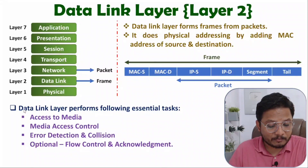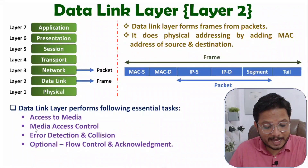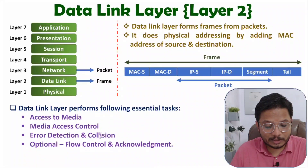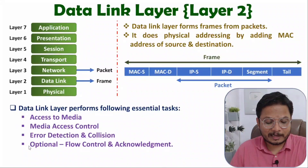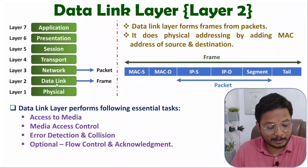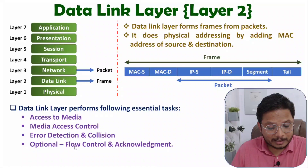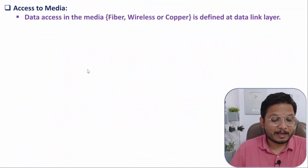Now let us understand how many tasks are performed by the Data Link Layer. The essential tasks are: access to the media, media access control, error detection and collision avoidance. A few optional tasks are also there, like flow control and acknowledgement. These optional tasks are also available in few models like the TCP/IP model. I'll explain each and every task in great detail in this video.